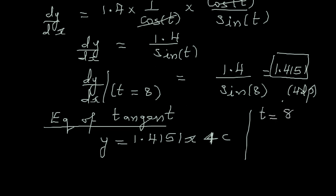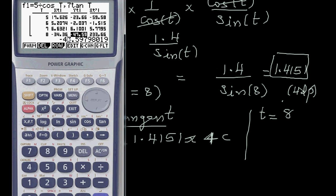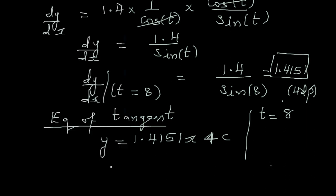Going back to the graphic calculator at t = 8: the x-coordinate (xt1) is −34.36 and the y-coordinate is −47.60 (both to 2 decimal places). Substituting these into the tangent equation gives the final equation: y = 1.4151x + 1.029.